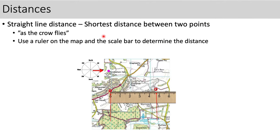When measuring distances on a map, there are two ways to do it. You can measure a straight line distance — 'as the crow flies' — which is the shortest possible path between two points. This is easy to determine because you can use a ruler, bring it to the scale bar at the bottom of the map, and determine the real-world distance between those two points. This is what we've practiced in class before.